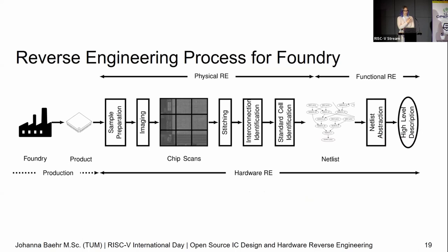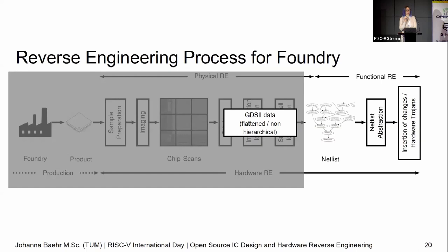This is the reverse engineering process for the foundry — they don't have to do all the big, expensive, long process. They get the GDS2 data from you and say: wonderful, because I don't need an SEM, I don't need to grind down the layers. I've got everything there. I extract the netlist, I get the functionality, I know exactly where to insert. In the best case, they say: hey look, that's the RISC-V core — I have 20 pre-made Trojans just for that. And you're not going to notice the extra two days they take, because nowadays you don't get chips back within the standard four weeks. We waited on ours for eight months.